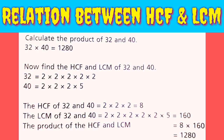The product of the HCF and LCM is equal to 8 multiplied by 160, which equals 1280. At the start, the product of 32 and 40 was also equal to 1280, and 8 multiplied by 160 is also equal to 1280. This is the relation between HCF and LCM.